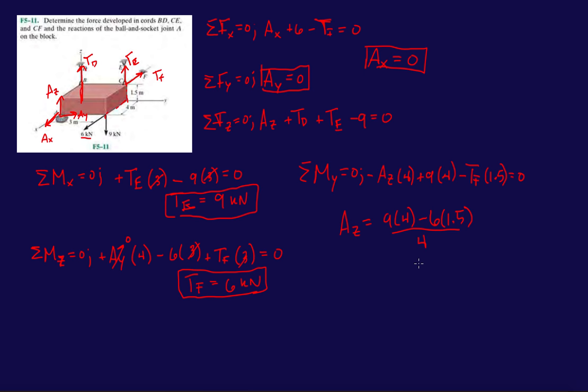So 36 minus 1.5 times 6, divided by 4. And I get AZ, it's 6.75 kilonewtons. Now I have AZ and TE, so let's solve for TD. TD is 9 minus AZ minus TE. So it's 9 minus 6.75 minus TE, which is 9. Minus 6.75 kilonewtons. Nice.